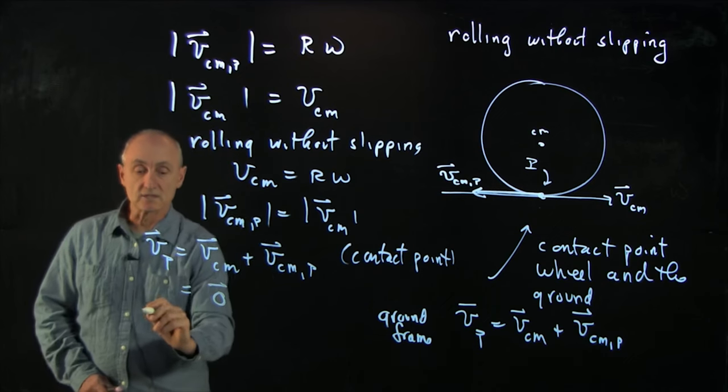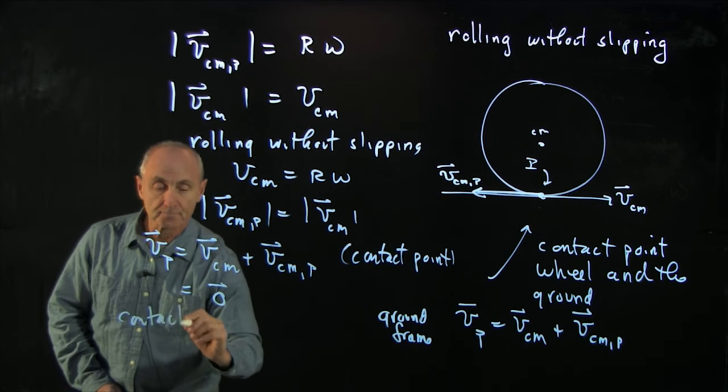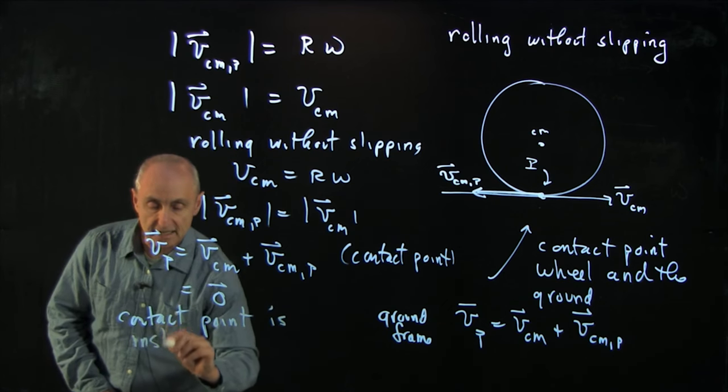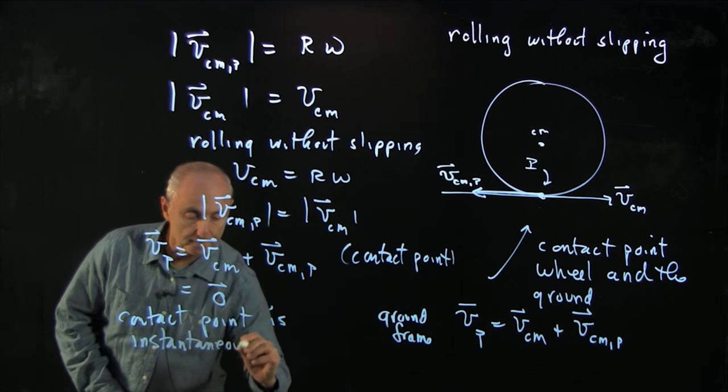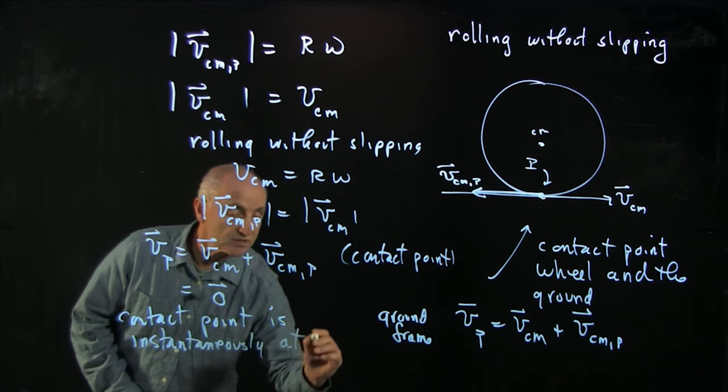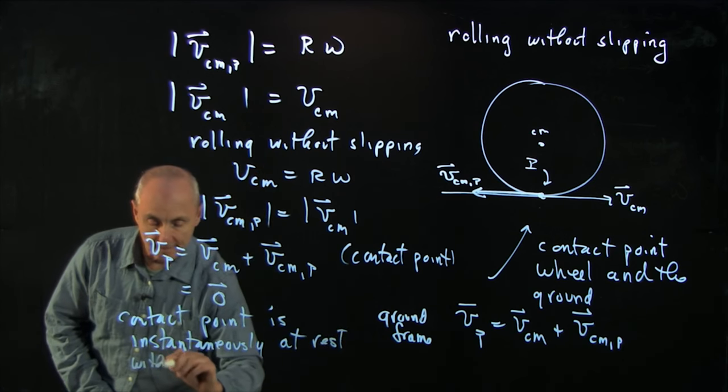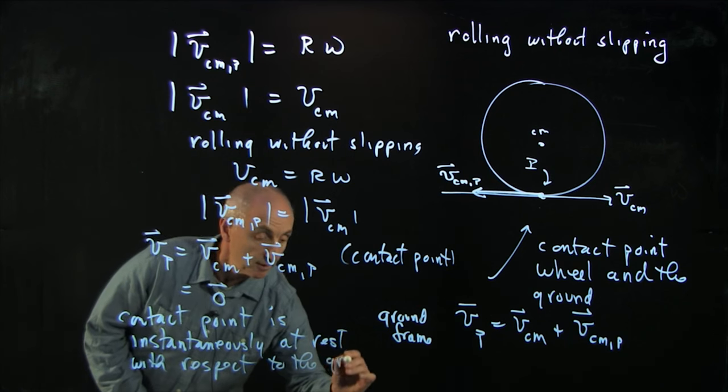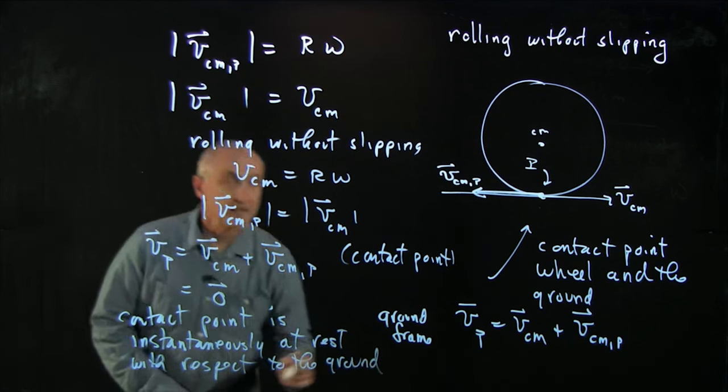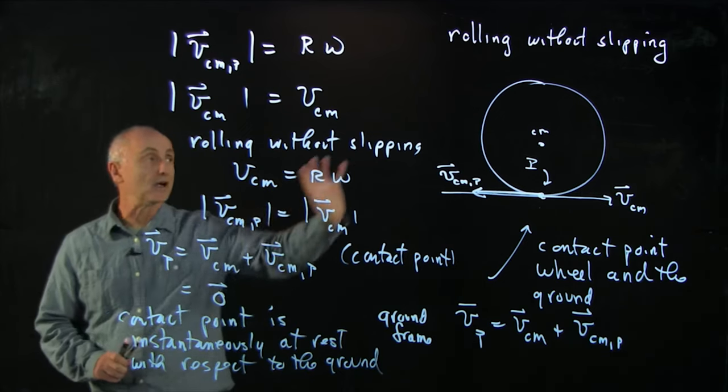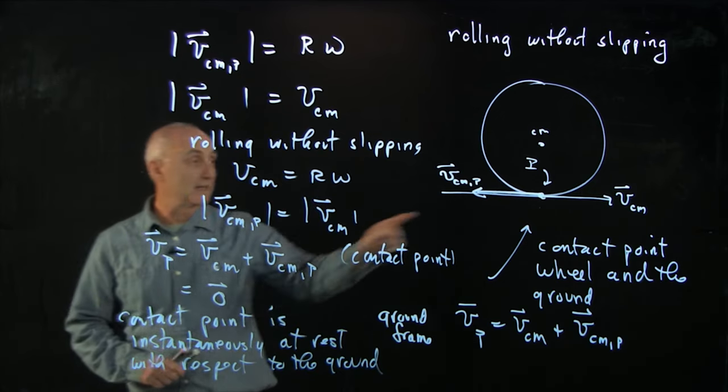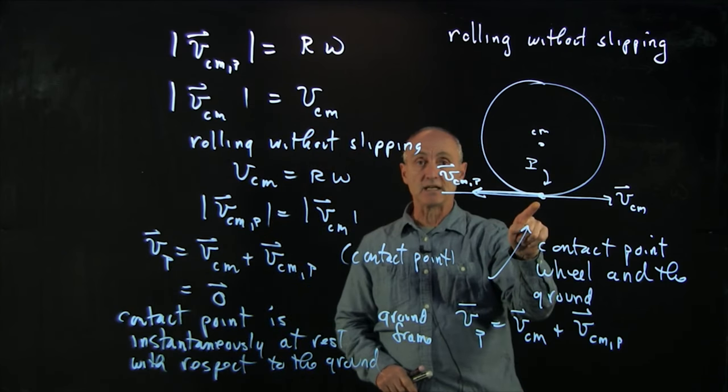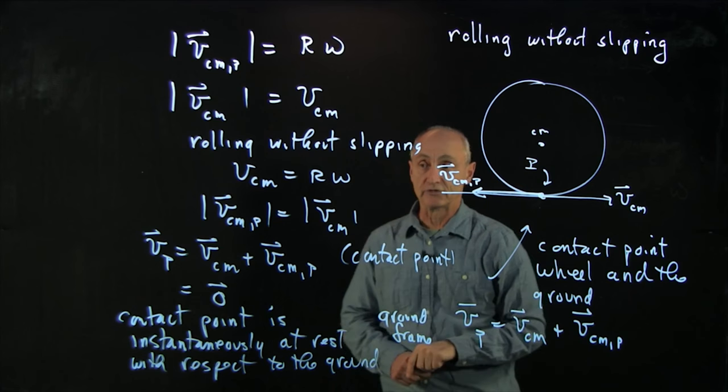So what we say is that the contact point is instantaneously at rest with respect to the ground. And that's what really is the mystery of a wheel that's rolling without slipping. That this contact point is the sum of these two vectors, and it's instantaneously at rest with the ground when the wheel is rolling without slipping.